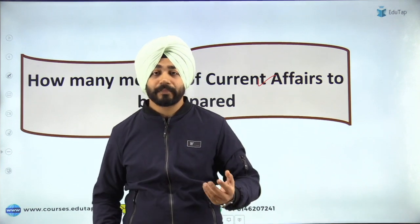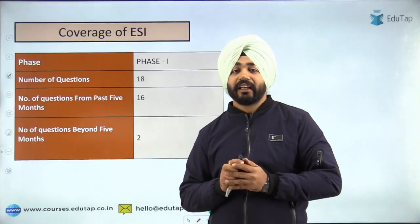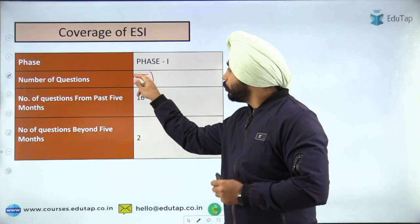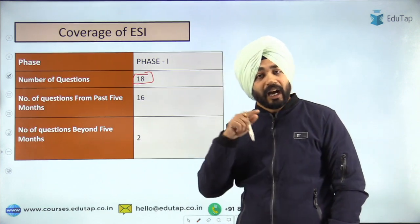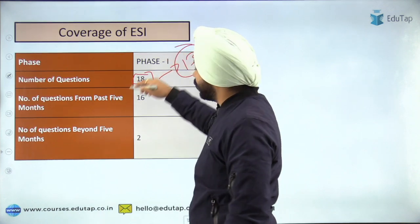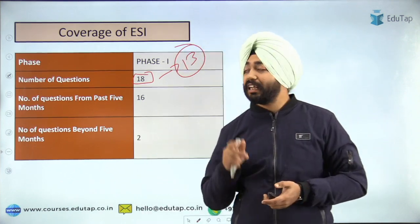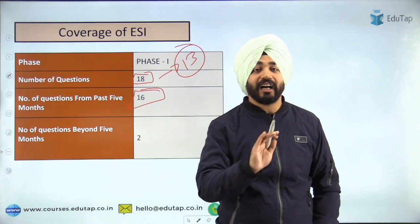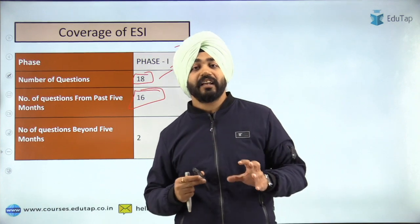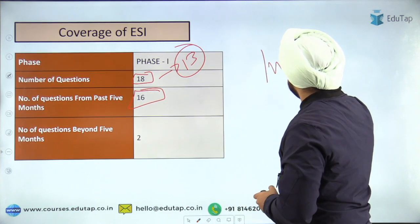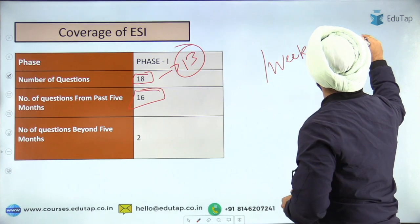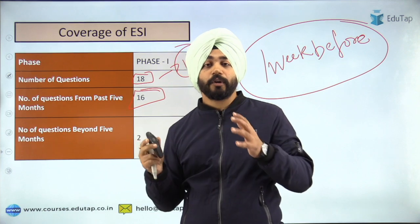Now the important question: how many months of current affairs do we need to prepare for finance? In Phase 1, there were a total of 18 questions from banking and finance, including current and static. Of the 13 direct current affairs questions plus 5 static-but-derived questions, 16 questions were asked from the past five months. So if you are starting to prepare finance current affairs, the last five months is the key. And within those five months, the last three months are the most critical. Calculate these five months starting from one week before the examination date.